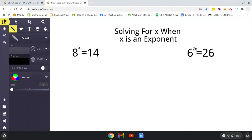Now, this is a little bit different. So obviously here, 8 is our base, x is our exponent, and 8 to the x is giving us 14. So we need to write this a different way.